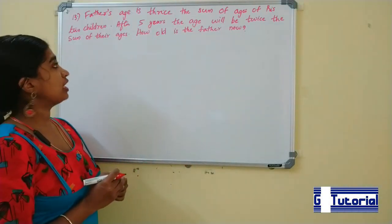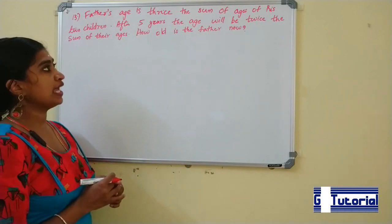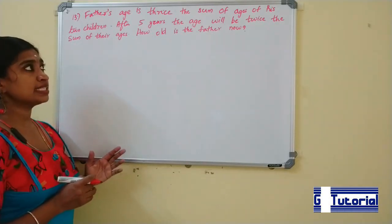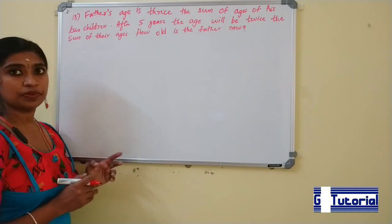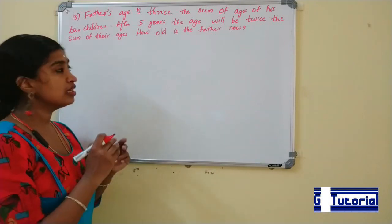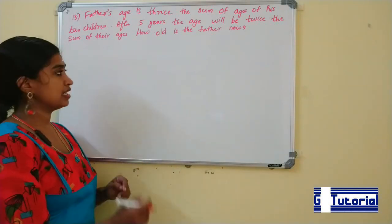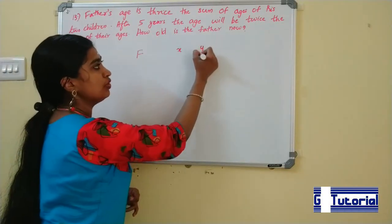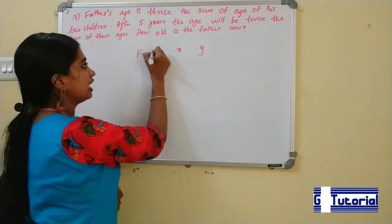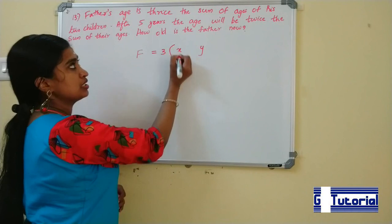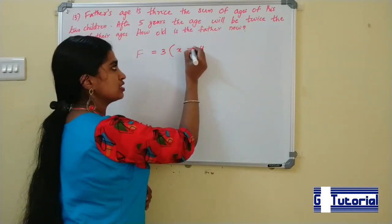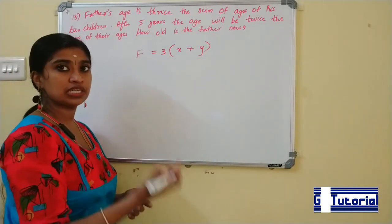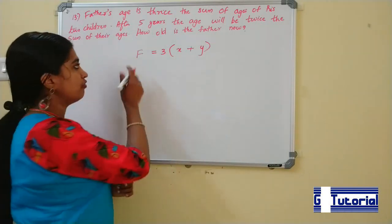Next question. Father's age is thrice the sum of the ages of his two children. After 5 years, his age will be twice the sum of their ages. How old is the father now? Let the father's age be f and the children's ages be x and y. The father's present age is thrice the sum of the ages of his children.